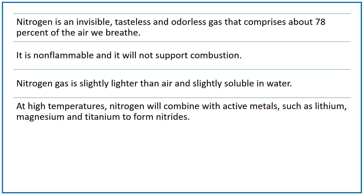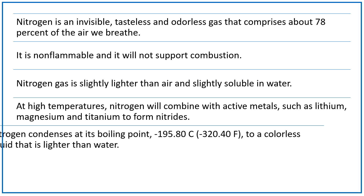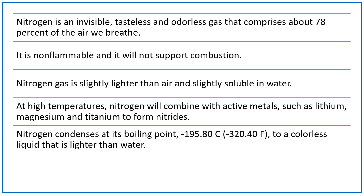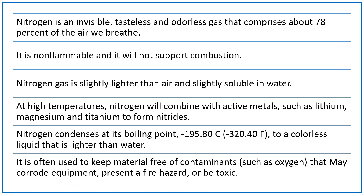At high temperatures, nitrogen will combine with active metals such as lithium, magnesium, and titanium to form nitrates. Nitrogen condenses at its boiling point of minus 195.80 degrees centigrade to a colorless liquid that is lighter than water. It is often used to keep material free from contaminants such as oxygen that may corrode equipment, present a fire hazard, or be toxic.